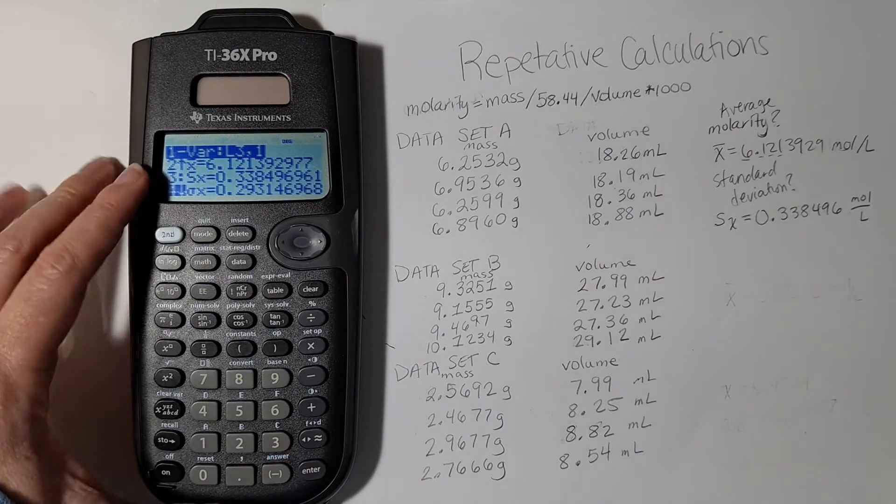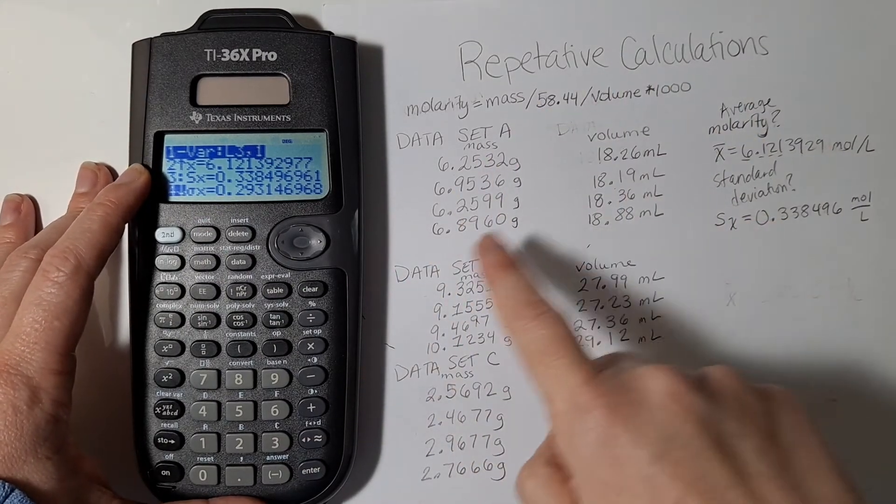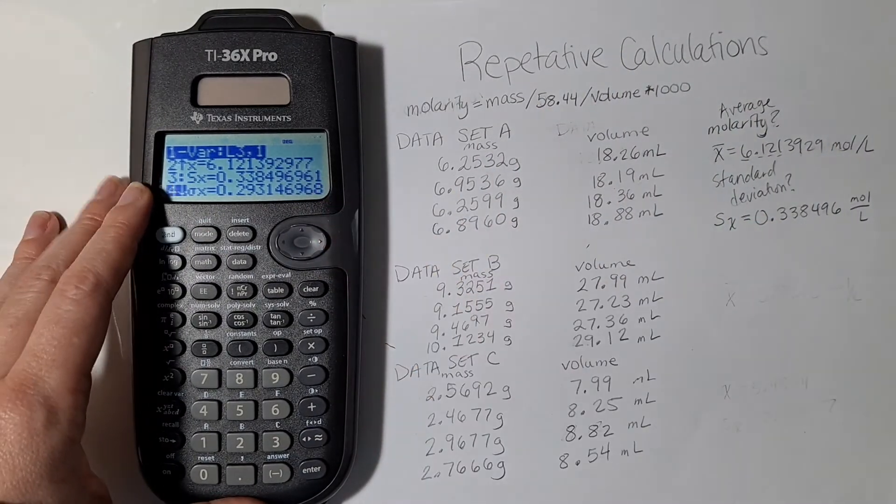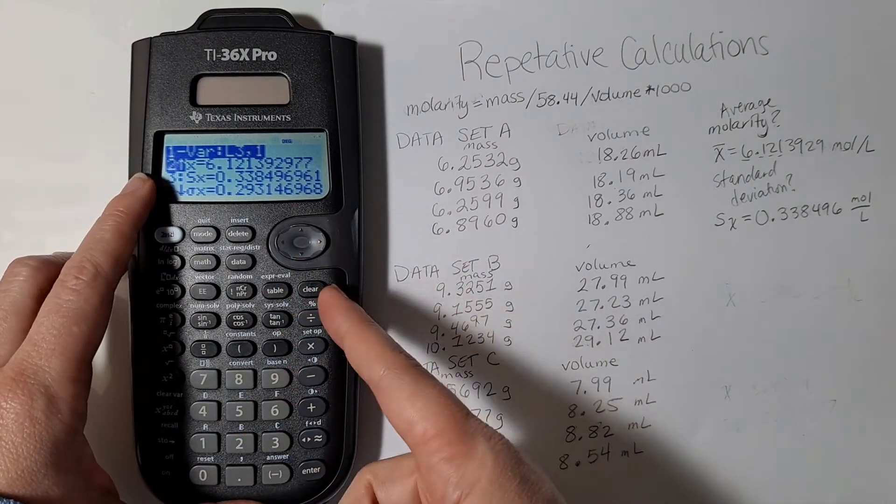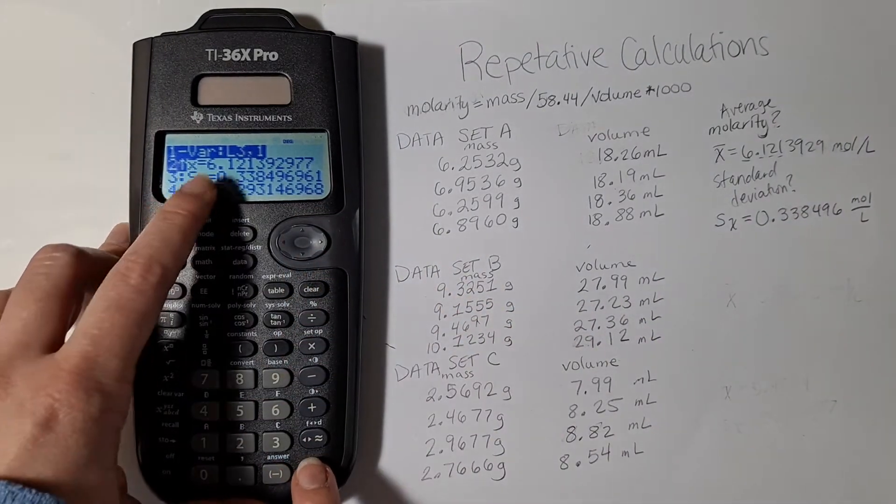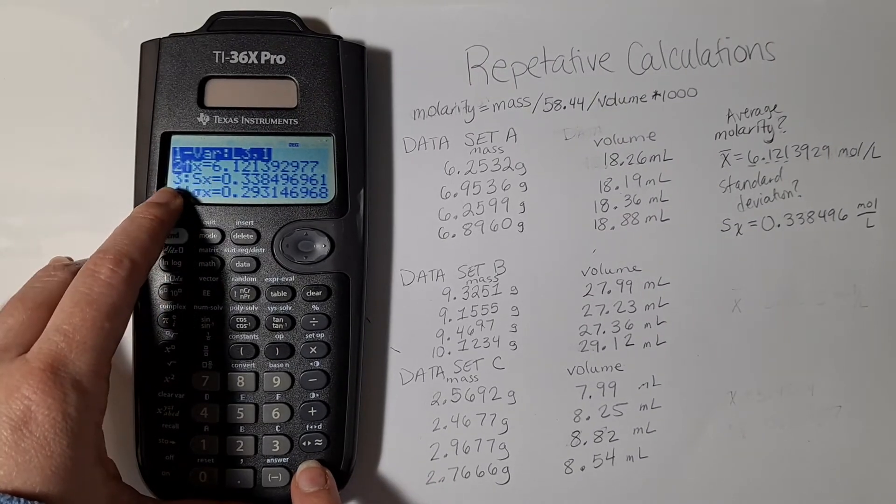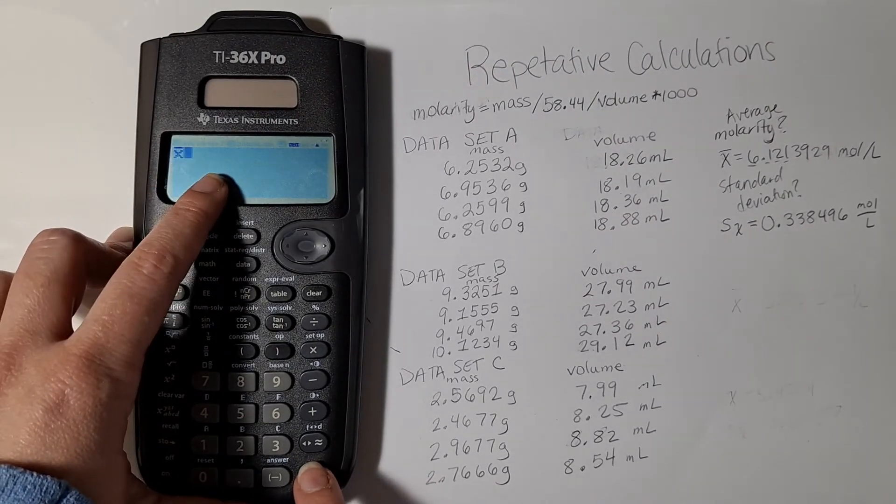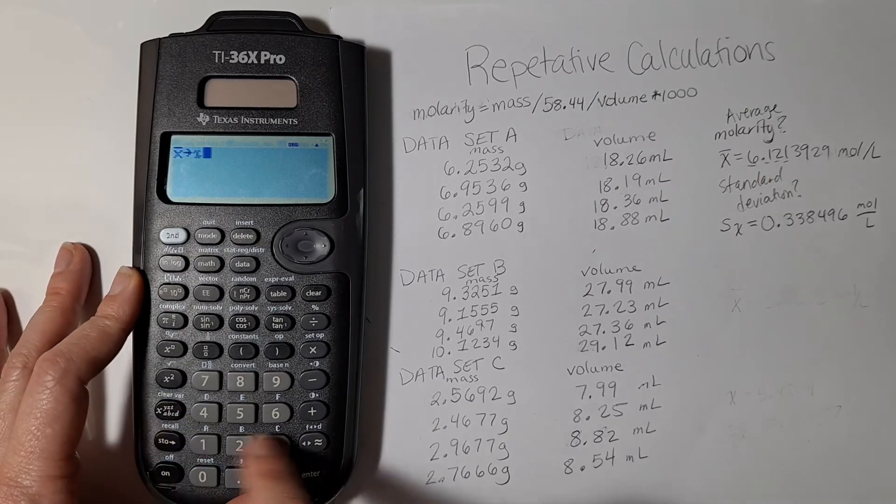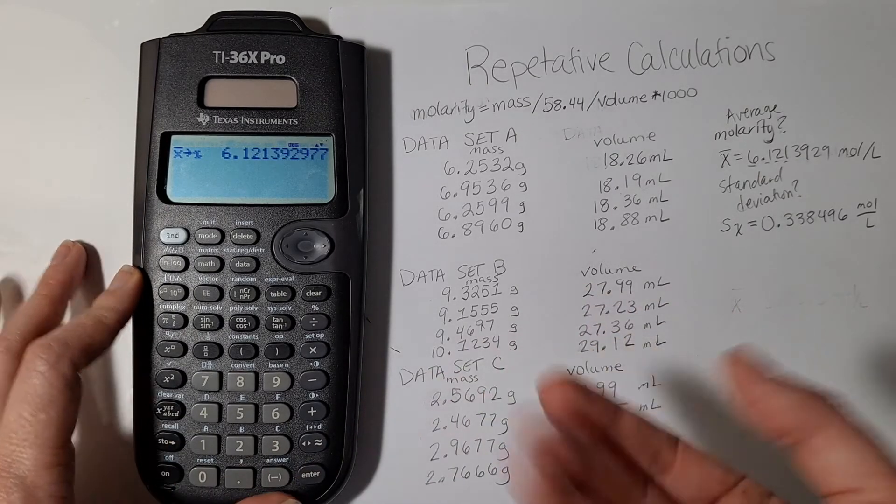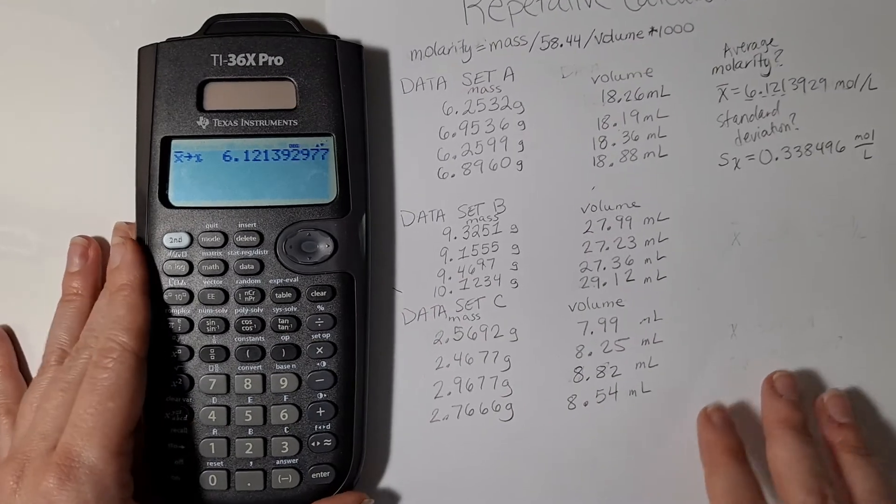If I want to use these numbers in the future for other calculations I can select them and then it brings me back out here to where I was previously, the main menu, and I can store those as a number. But let's move on and figure out our molarities and averages for our second data set.